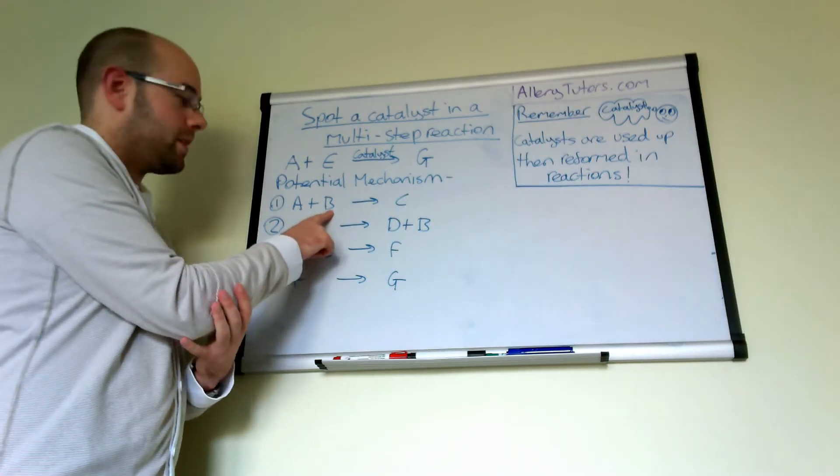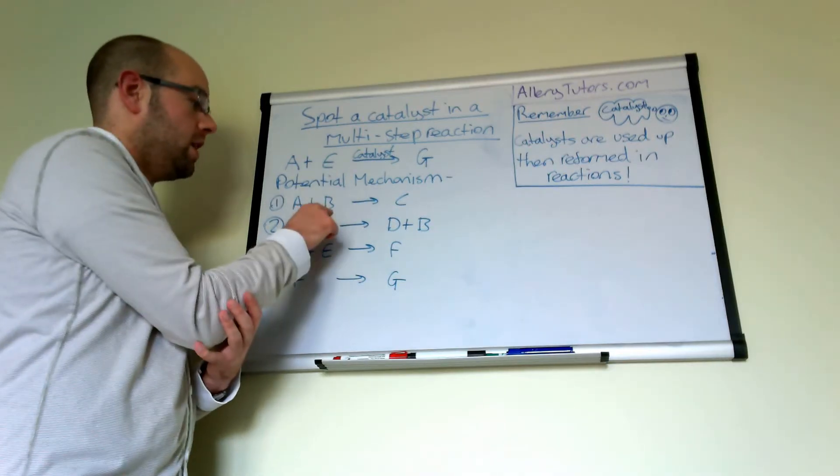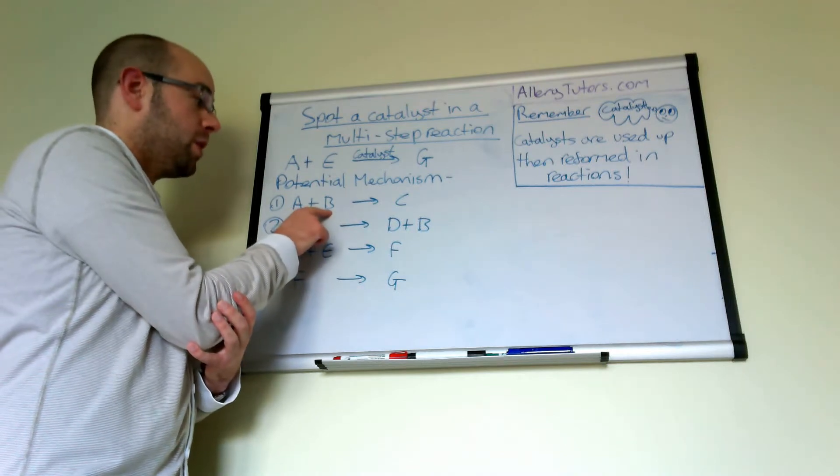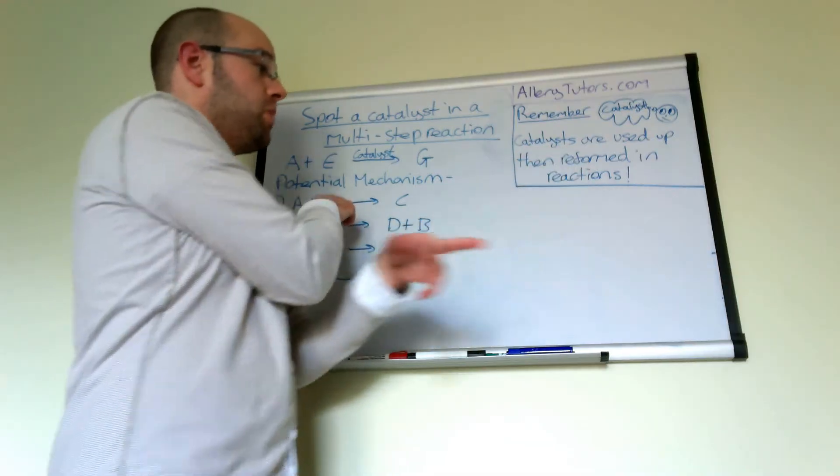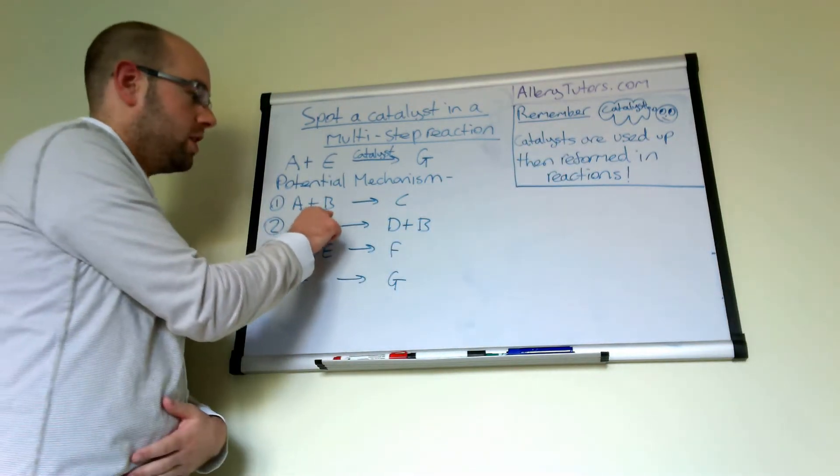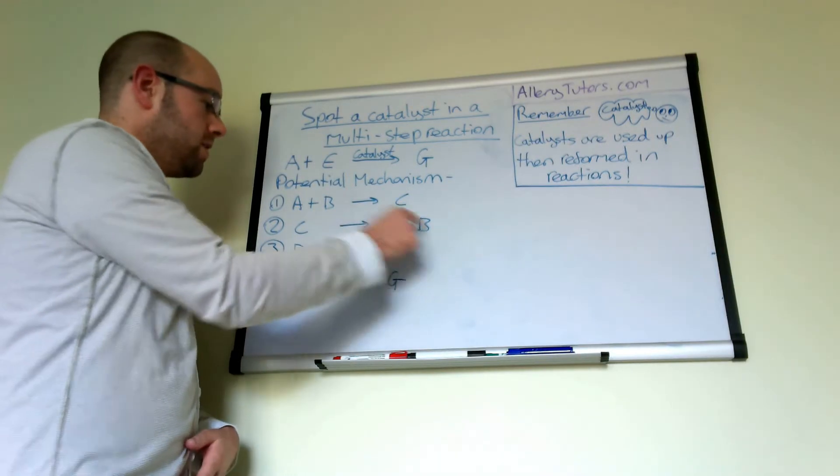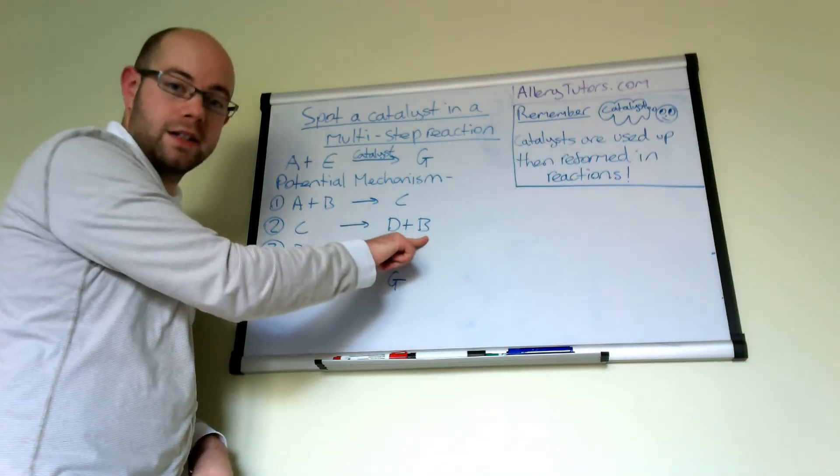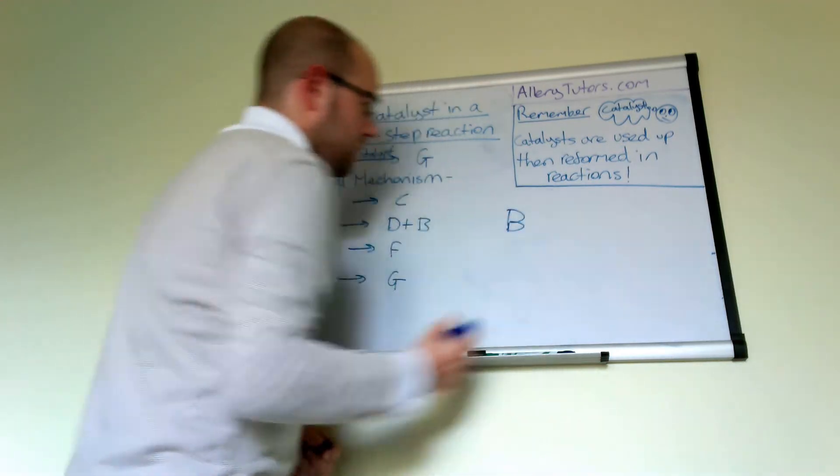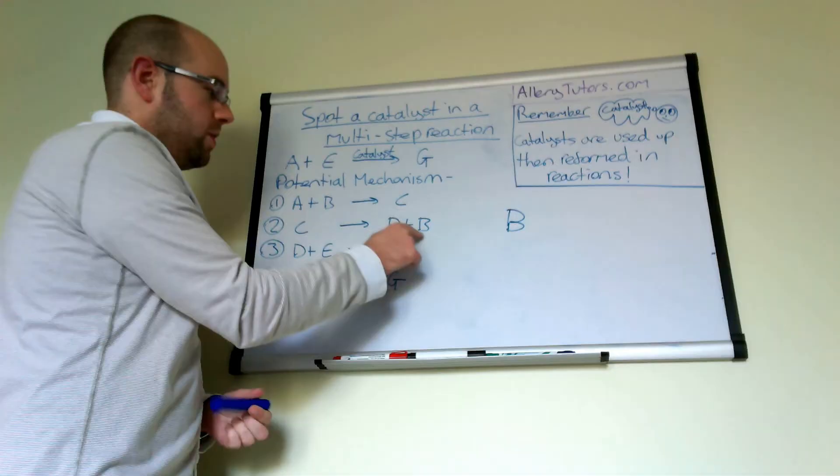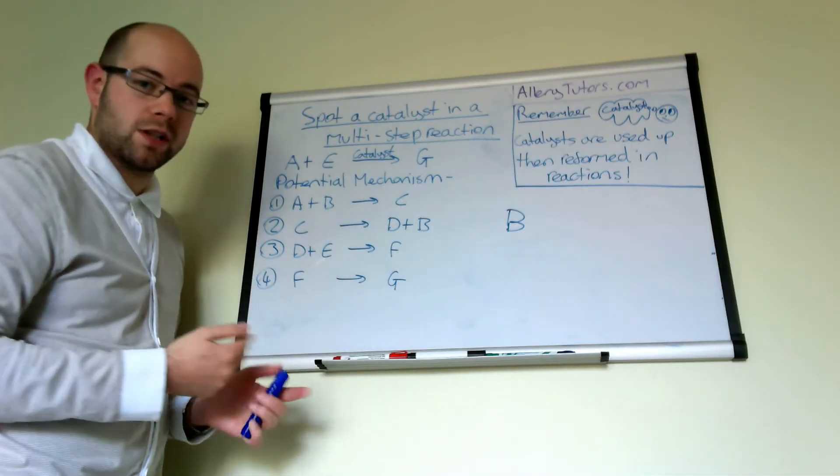If we look at B, so B is actually reacting here with A. B doesn't appear in here, so it's reacting with A, but if you look, you need to try and find, it's been used up at this point but it needs to be reformed somewhere else. You can see later on down here that B is actually being reformed. So B could potentially be the catalyst in this case. So B looks to be the catalyst because it's actually being reformed and it's not being used up in any other further step after that, but we'll check the rest anyway just to make sure.